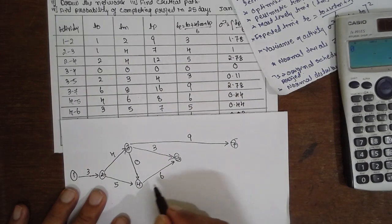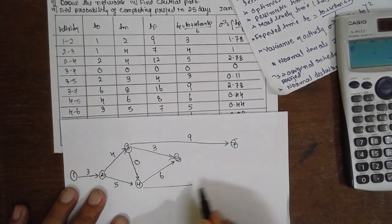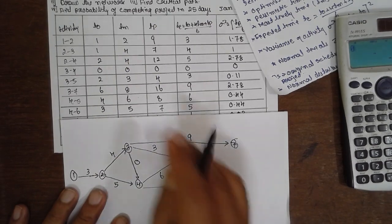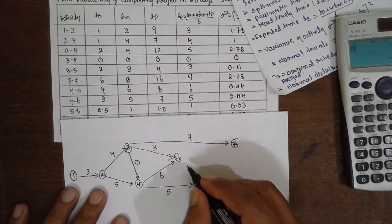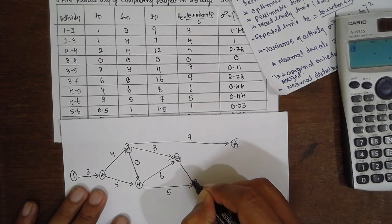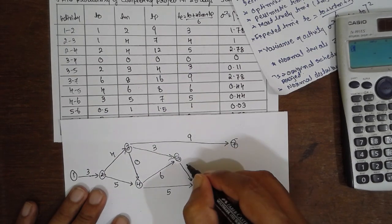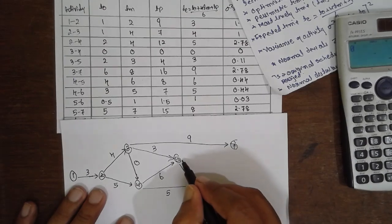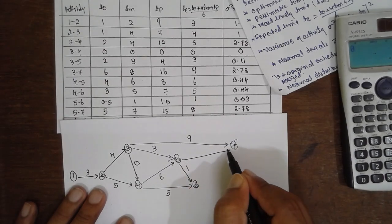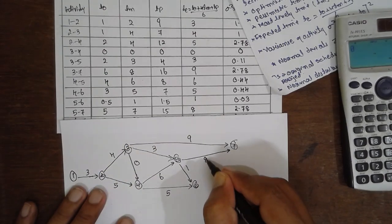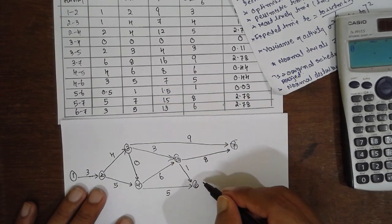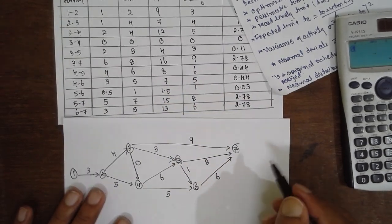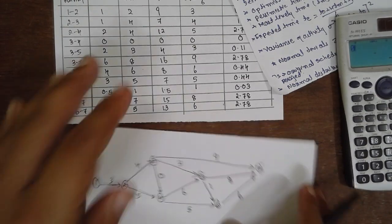4-6. 4-6, 4-6, 6. 5-6. 5-6, 1. 5-7. 5-7, 8. 6-7, 6. This completes the network diagram.